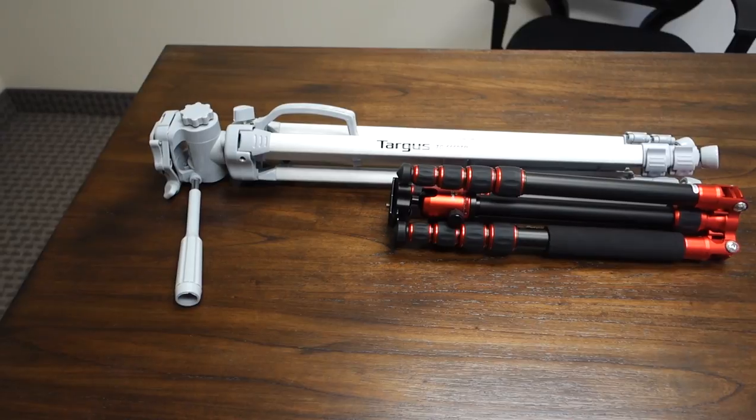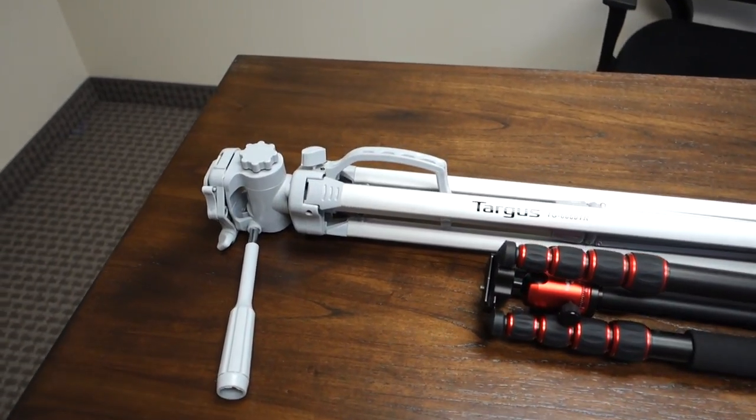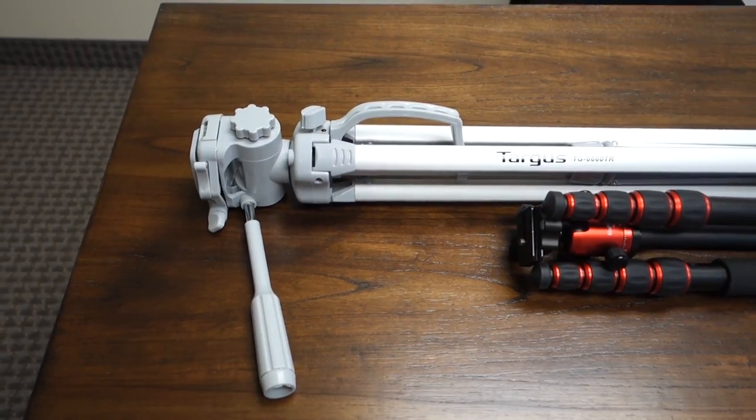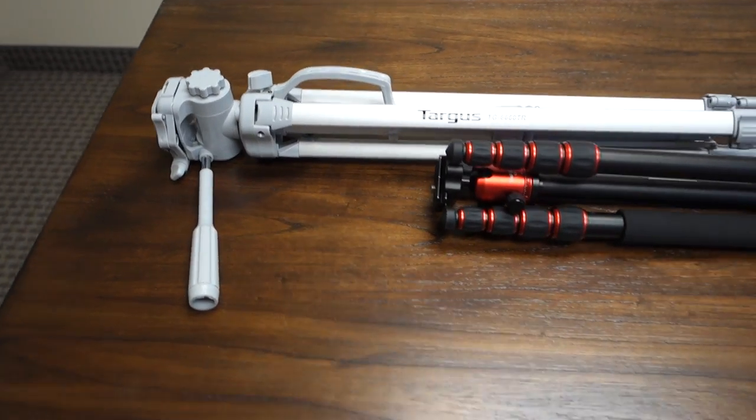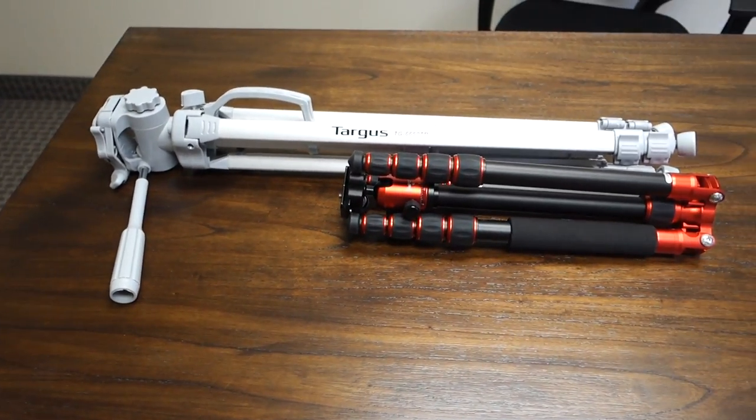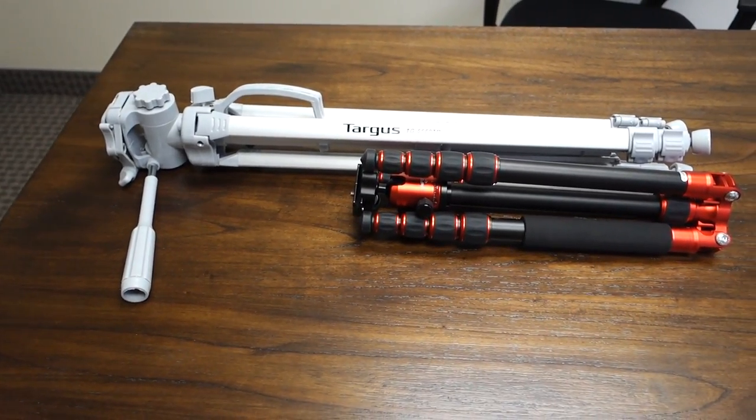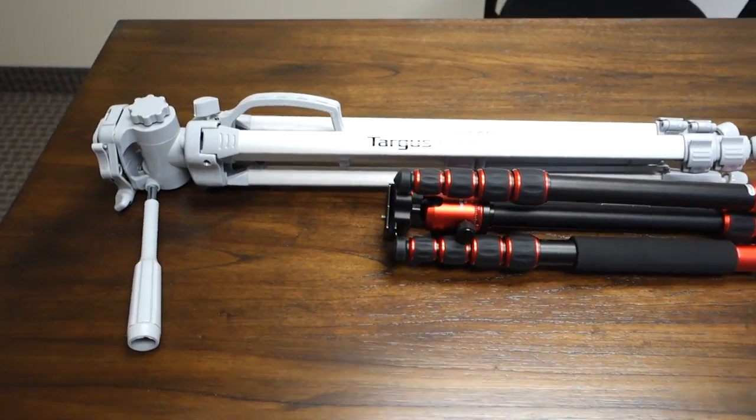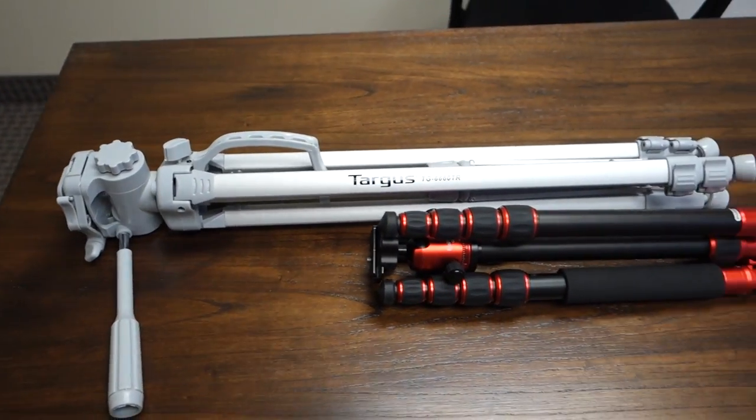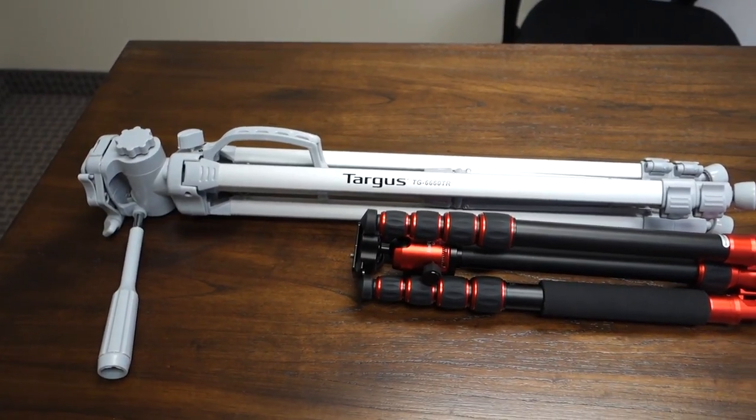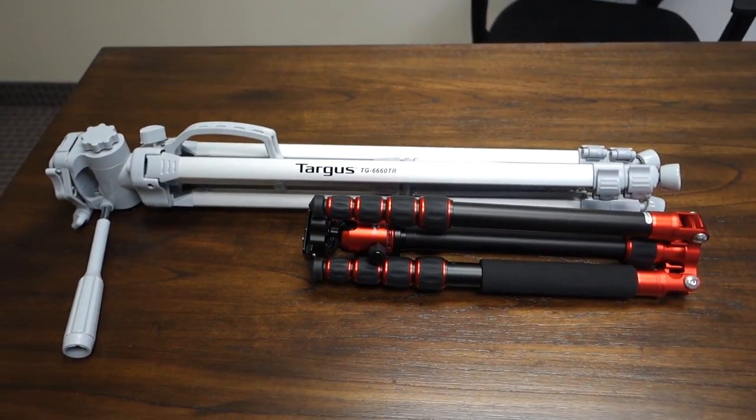So you can see how much difference there is between the folded up MeFoto and of course the folded up Targus fully closed. And see how the Targus even though it has a handle, you take that handle away, you still have a lot of space being taken up. Now that's not exactly a small thing, I mean it's pretty big but it's not that big, but it's big enough to where you think about it.